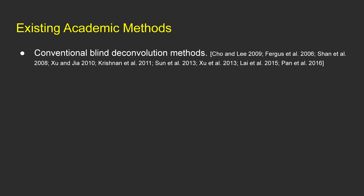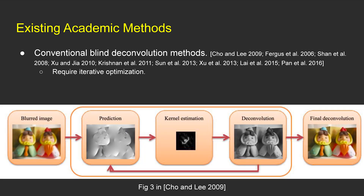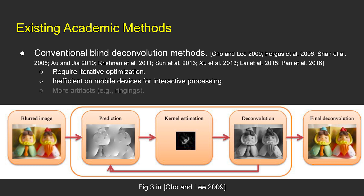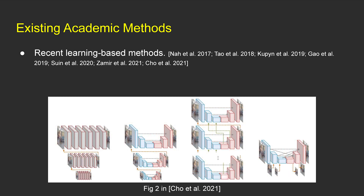Motion de-blurring is also a long-standing research problem studied for decades. Conventional blind deconvolution approaches often use iterative optimization to estimate blur kernels and latent images, which are too slow to run on mobile devices, and often generate ringing artifacts or unnatural results when they fail. Recent learning-based methods learn end-to-end deep CNNs to de-blur an image without estimating a blur kernel. However, large model size and high memory consumption are usually the bottlenecks for deploying those models on mobile devices, and they often do not generalize well to real images in the wild.